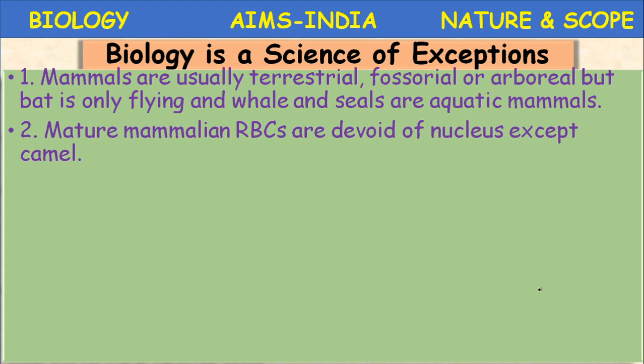Mature mammalian RBCs are devoid of nucleus, except in the camel. Generally, a premature or early RBC consists of a nucleus, but when it gets mature, the nucleus and other organelles disappear, making it like a prokaryotic cell. But in the camel and llama, nucleated RBCs are present. This is an exception.